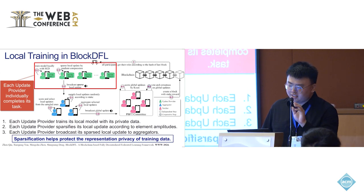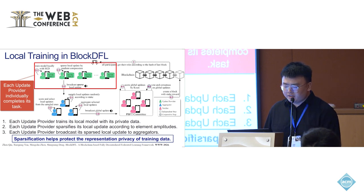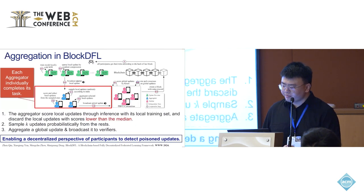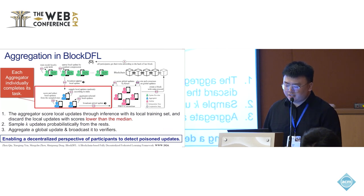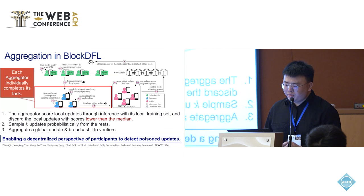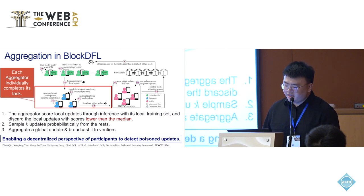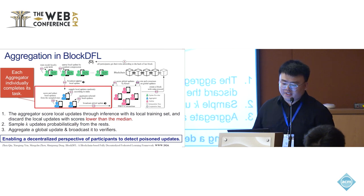In the second process, each update provider trains its local model with its private data, and sparsifies its local update according to element magnitudes, then broadcasts the sparse local update to verifiers. This sparsification helps protect the representation privacy of training data. When the aggregator receives a number of local updates, it scores each local update through inference with its local training data, and discards local updates with scores lower than the median. Then it aggregates a global update and broadcasts it to verifiers. This process is performed individually, so there are several global updates sent to the verifiers.